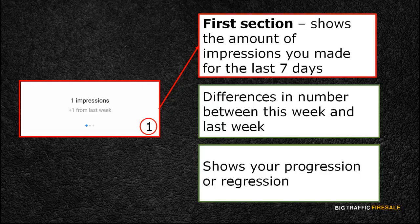The first section is at the top of the screen. It will show you how many impressions you made for the last seven days and the difference in number between this week and the week before. These numbers are basic information on whether you're progressing or regressing that week.